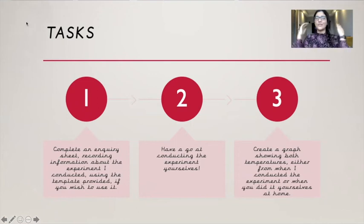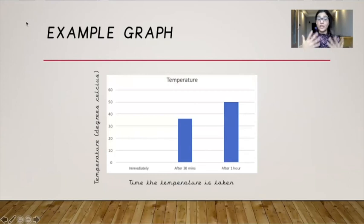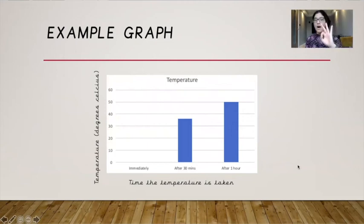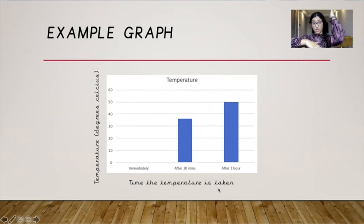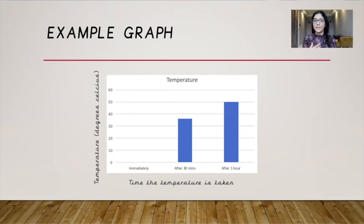If you conducted the experiment yourselves, please use the readings from your experiment — you don't need to use mine. The graph can look something like this, where you have temperatures going up in numbers and three different bars: one showing the immediate temperature, one showing the temperature after 30 minutes, and one showing the temperature after one hour. Remember to have a title and to label the axes to show what the graph is displaying. Have a go at creating that graph.